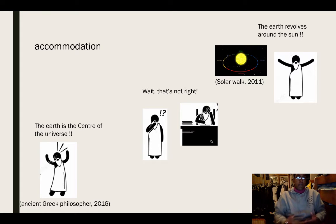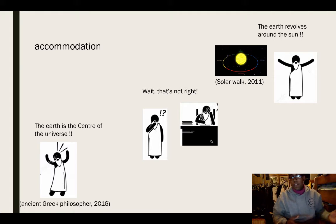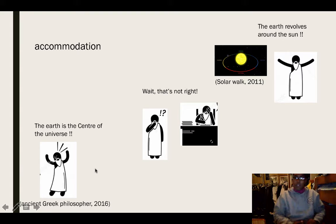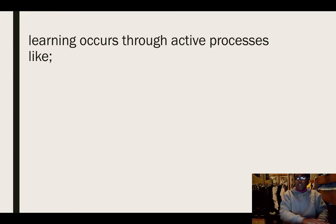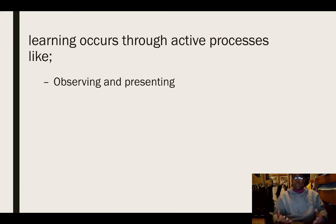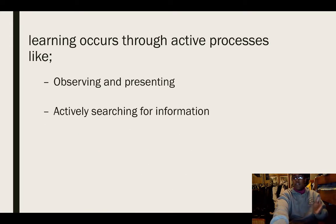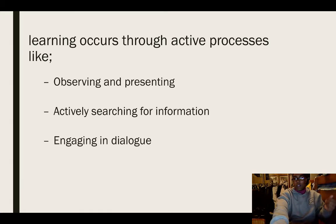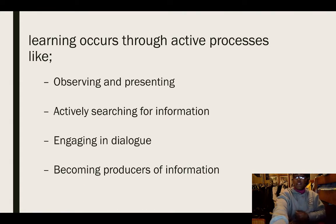Accommodation, on the other hand, is altering pre-existing knowledge based on new information. So if some information is wrong, you change it to suit what's actually right. For example, a Greek philosopher thinks that the earth is the center of the universe, but he reads some books and does some research and finds out that's not right, so he corrects himself, stating that the earth revolves around the sun. This all occurs through active processes like observing, actively searching for information, being part of the learning process, engaging in dialogue about content, reinforcing content in their minds, and becoming producers of information.